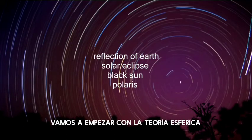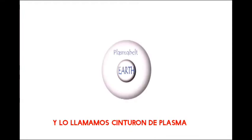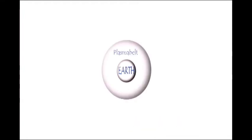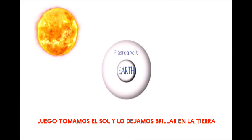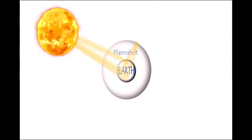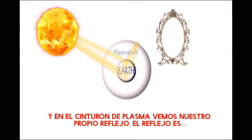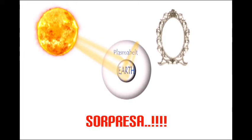We are going to start with the spherical theory. It's simple. We take a ball and we call it Earth. We surround this ball with another ball and we call it the plasma belt. Then we take the Sun and we let it shine on the Earth. The Earth is giving a reflection on the plasma belt, and on the plasma belt we see our own reflection. The reflection is — surprise! — the Moon!